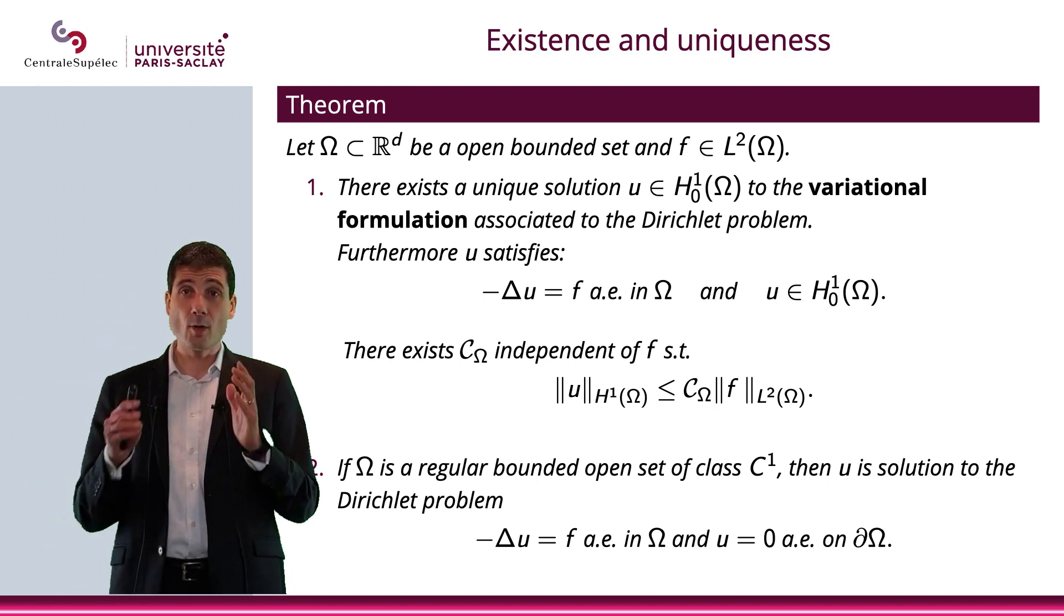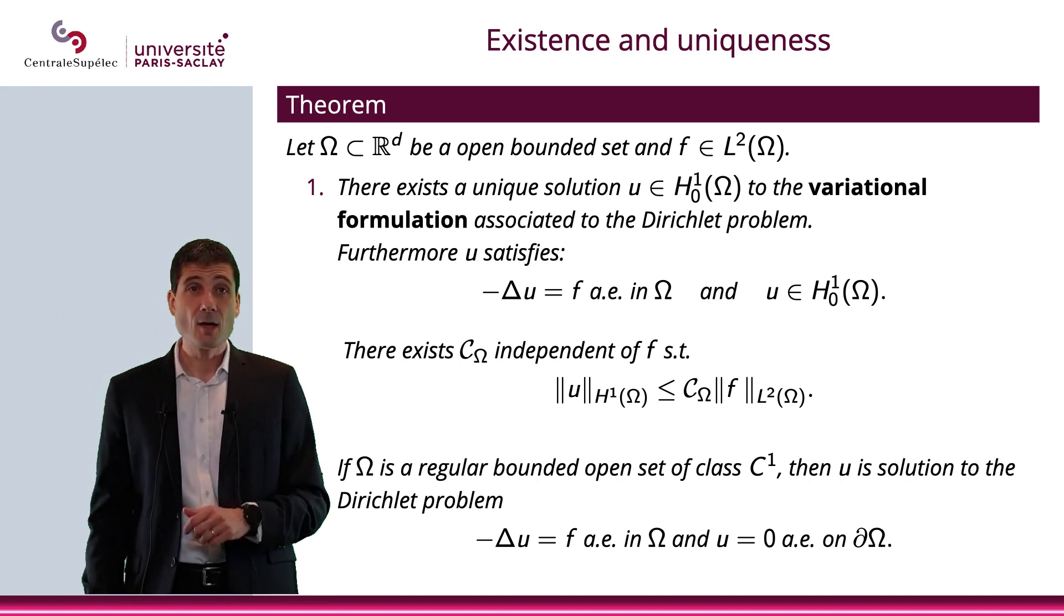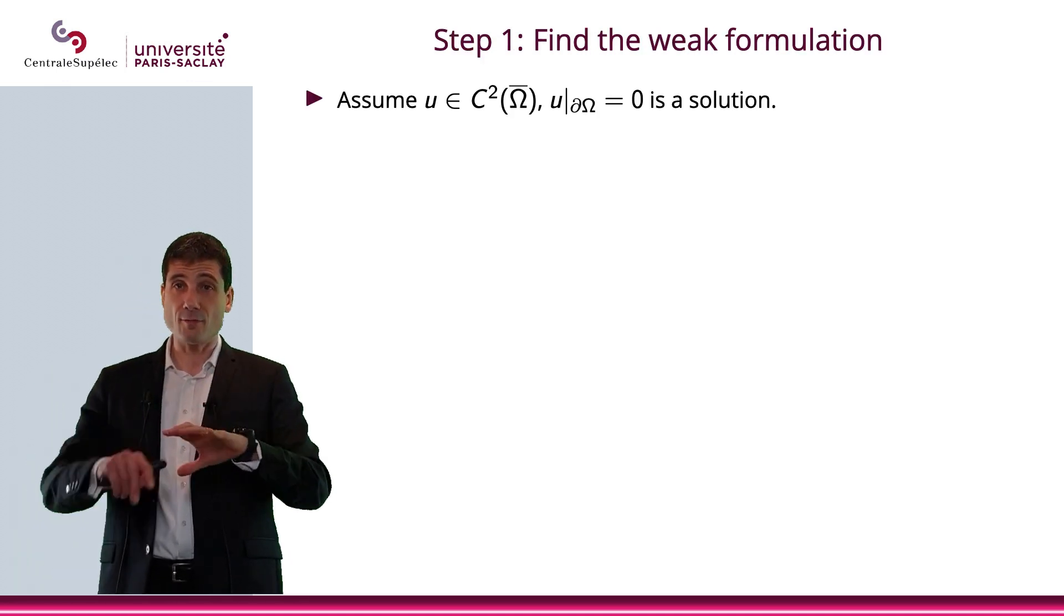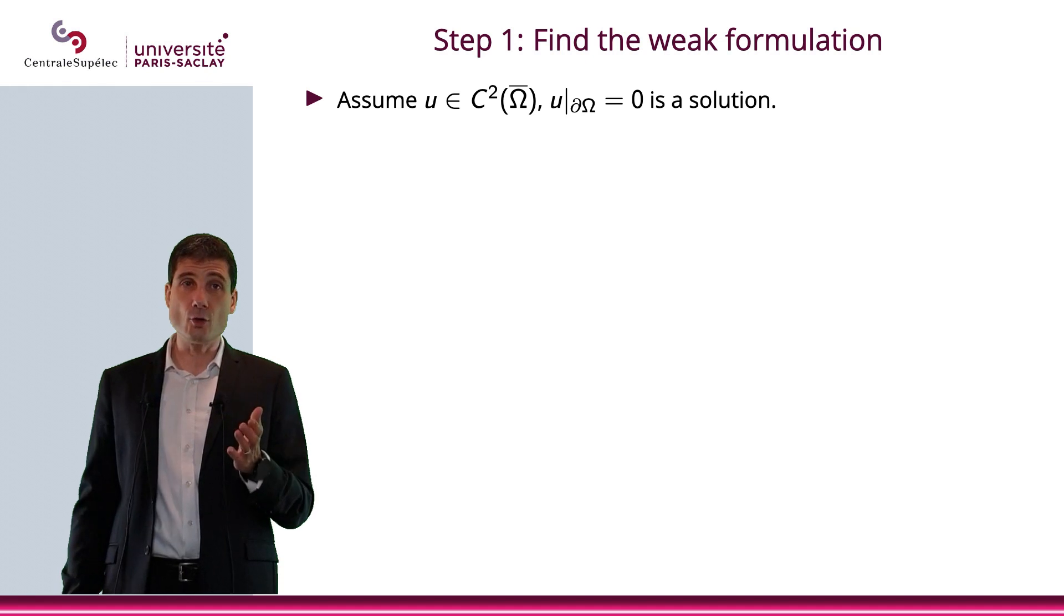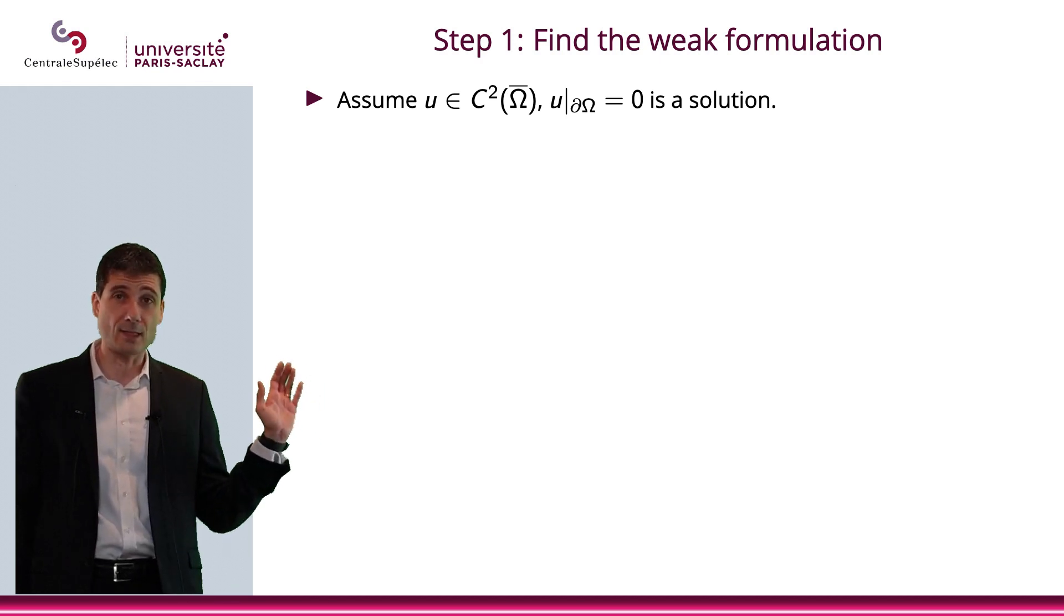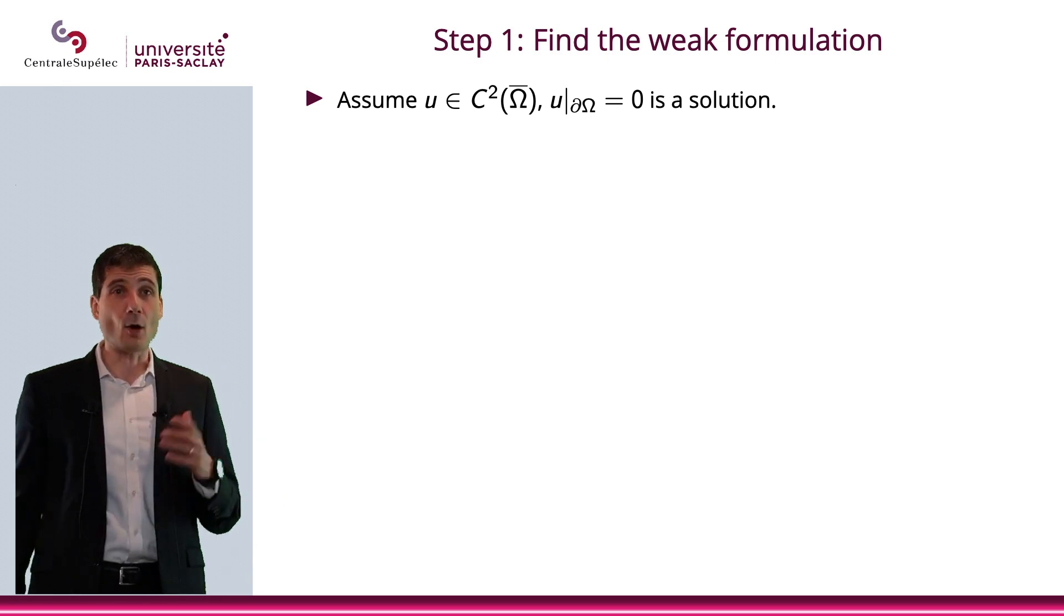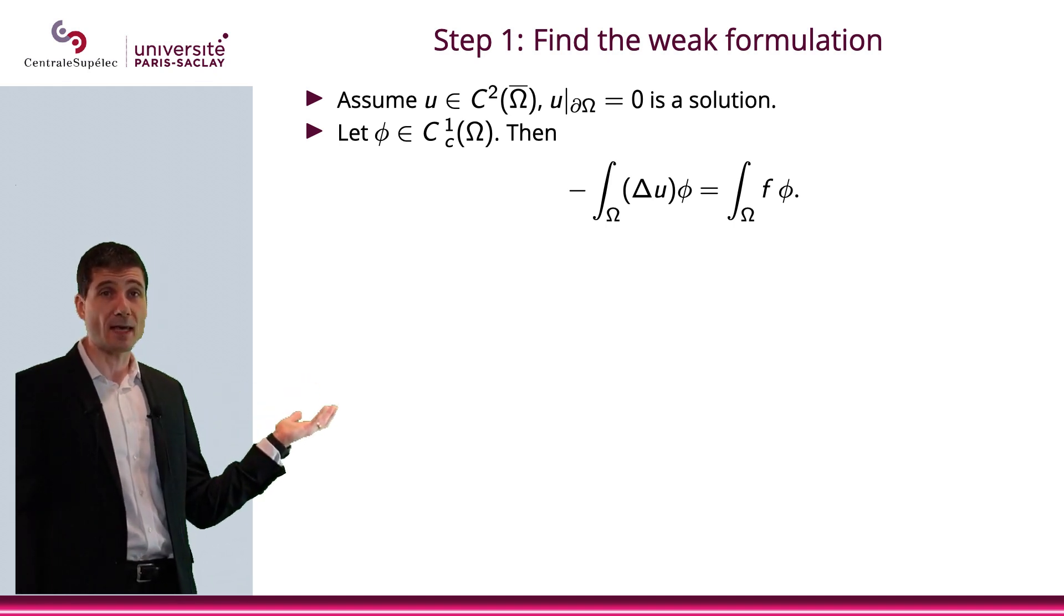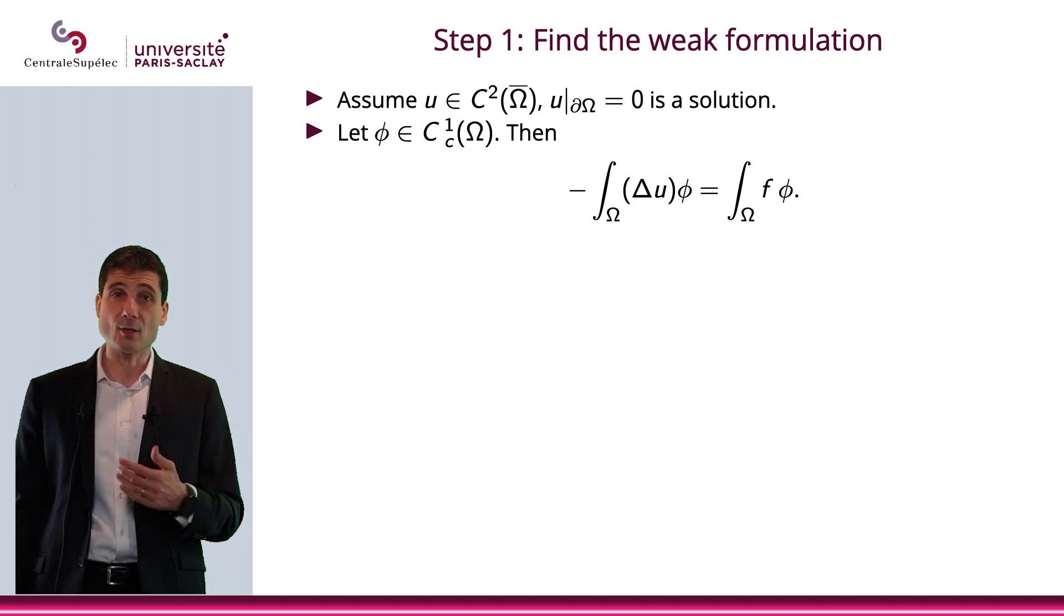To prove this theorem, we're going to apply exactly what we did in dimension 1 with the seven steps. Step 1: we will assume that u is in C^2 all the way to the closure of omega, and that u on the boundary equals 0 is a solution. That's not part of the proof; it's what will allow me to write the variational formulation. I multiply my equation by phi on both sides, integrate over omega, and get minus integral over omega of Laplace u times phi equals the integral of f phi over omega.